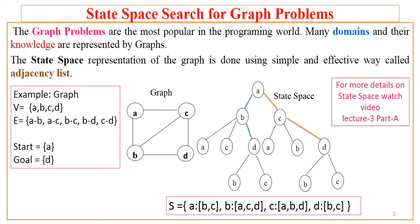Taking this sample graph as an example — focus where I'm pointing. We have a simple graph with four vertices A, B, C, D. The edges are: A is connected to B, A is connected to C, B is connected to C, B to D, and C to D. This is an undirected graph, meaning if there is a connection from A to B, there is also a connection from B to A.